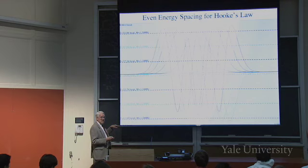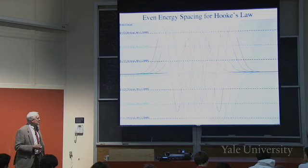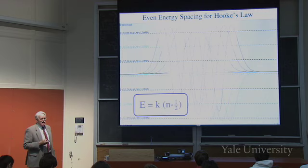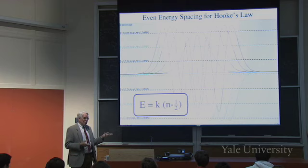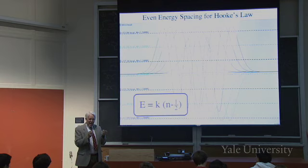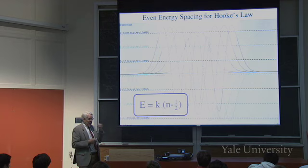The energy is some constant — roughly 8.3 — times an integer minus a half. Why integers? Because nodes come in integers; you can't have half a node. So for springs, harmonic oscillators, or an atom on a bond, as long as the vibration doesn't deviate from a parabolic potential, this is how atoms attached by bonds should behave approximately.